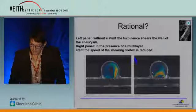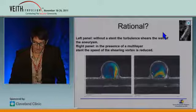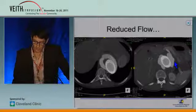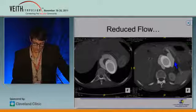Now, what's the rationale for using the multi-layer stent? I have to say, I still really don't understand, but we've seen that in the presence of the multi-layer stent, the speed of the shearing voltage is reduced. But do we really want to reduce the flow or the shear stress when we're treating large thoracoabdominal aneurysms, or do we want to exclude those aneurysms?